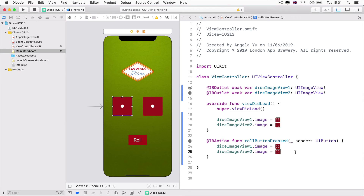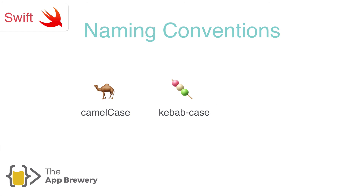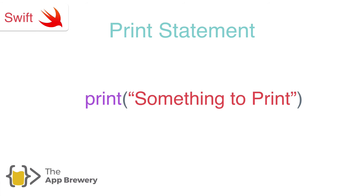Did you manage to get that right? If not, I recommend taking a look at the previous lesson and revisiting how we figured out how to change these properties through code. Now the next lesson is an optional lesson where we'll talk more in depth about naming conventions beyond camel casing, commenting in your code, print statements, and string interpolation. If you're already an advanced programmer, feel free to skip it and continue building out the app. But if you want a deep dive on those topics, head over to the next lesson.